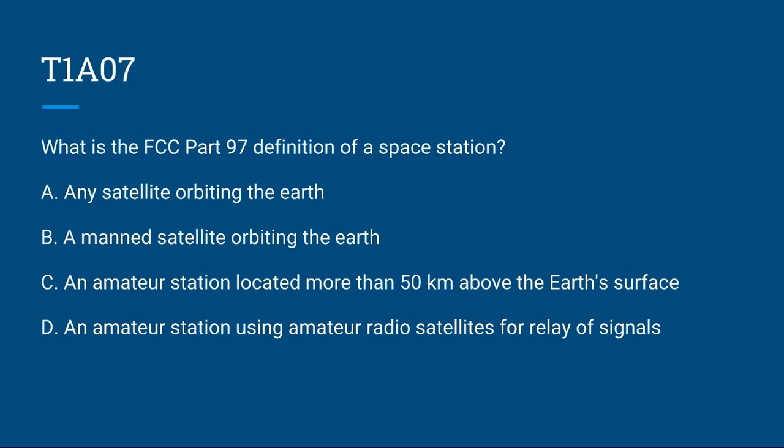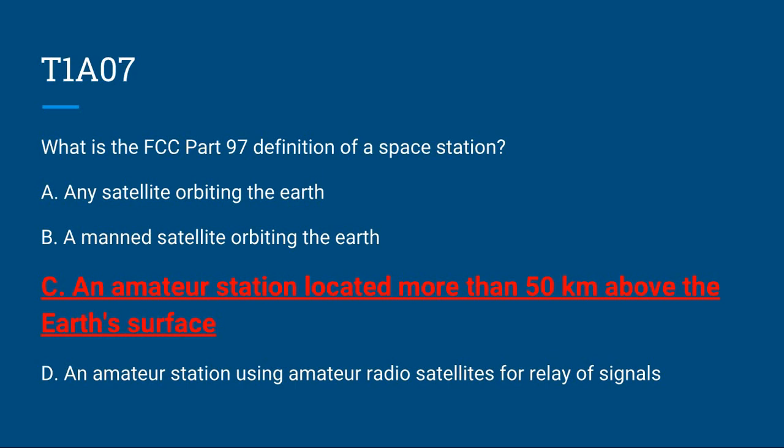T1A07: What is the FCC Part 97 definition of a space station? A, any satellite orbiting the Earth; B, a manned satellite orbiting the Earth; C, an amateur station located more than 50 kilometers above the Earth's surface; or D, an amateur station using amateur radio satellites for relay of signals. The correct answer is C, an amateur station located more than 50 kilometers above the Earth's surface.